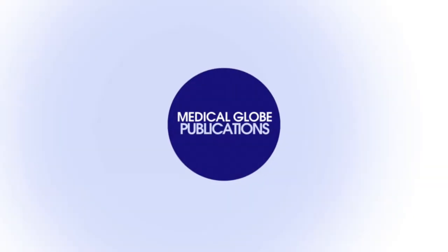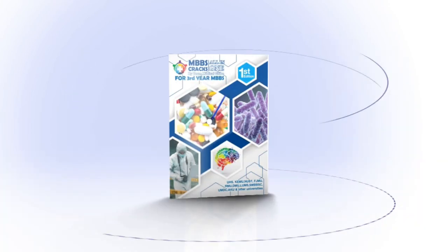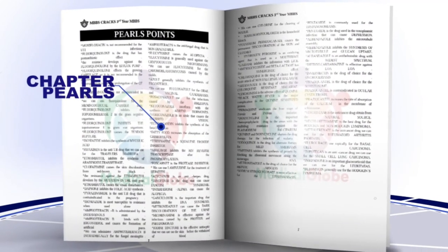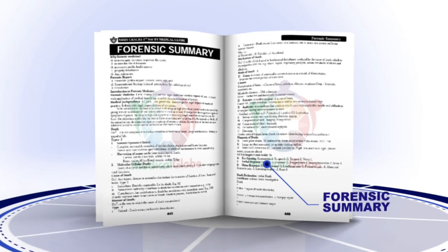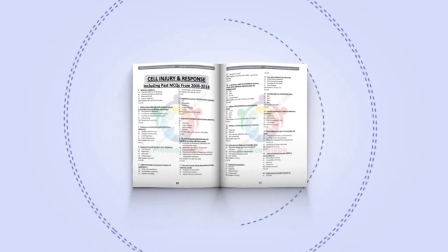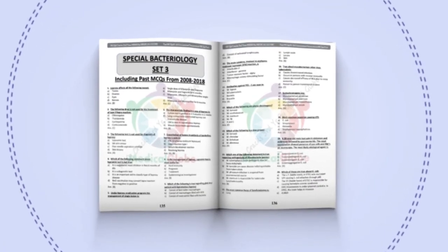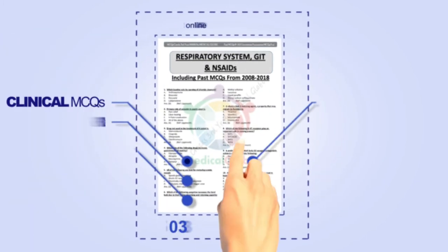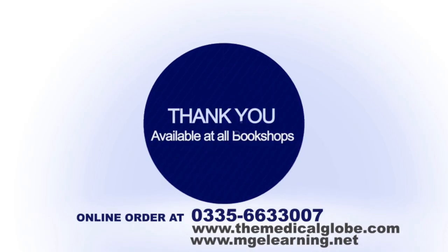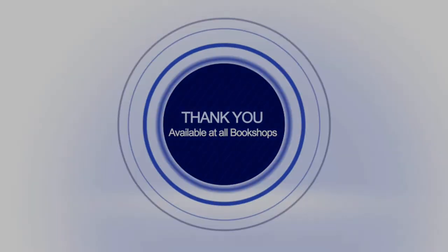Medical Globe brings you the solution to problems you face during your professional exams. We are introducing MBBS Cracks — a book containing chapter-wise important topics and solved past university questions. Chapter pulls are given to help you ace your MCQs exams. Concise summaries and important pictures from Big Robbins and OSPI in high resolution are added to help you ace your OSPI exams. MCQs Cracks has also been introduced, containing MCQs not only from UHS but also from several other universities. Get your book ordered online at 0335-6663-007.